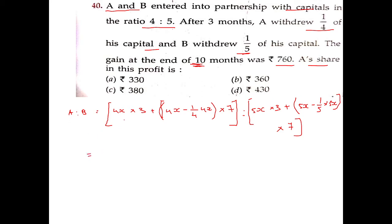So here we can get 4 multiplied by 3 is equal to 12x plus 21x is to 15x plus 28x, which is equal to 33x plus 43x.